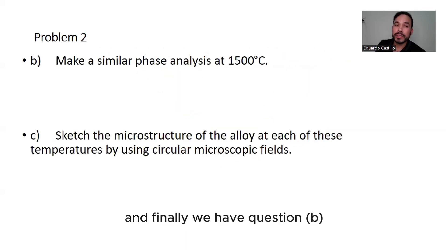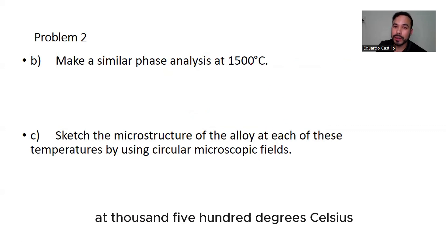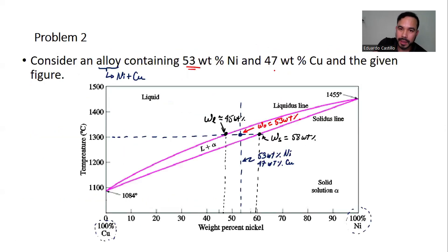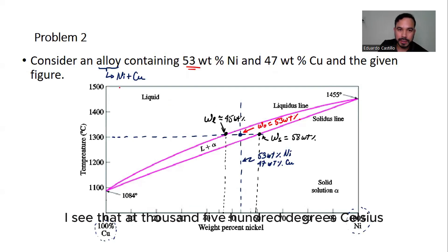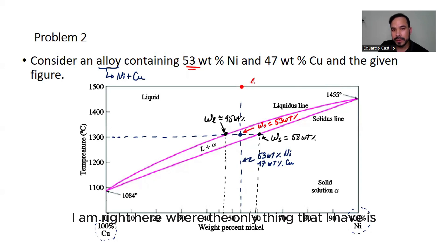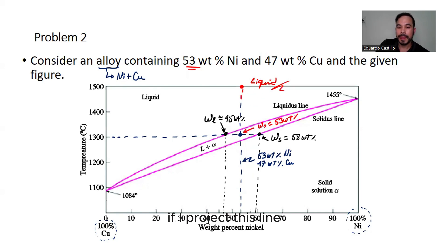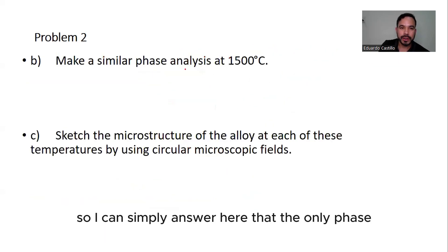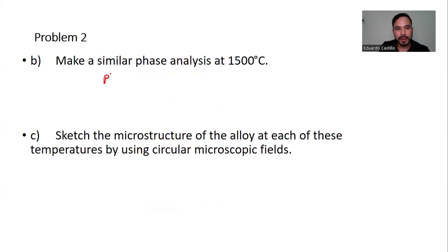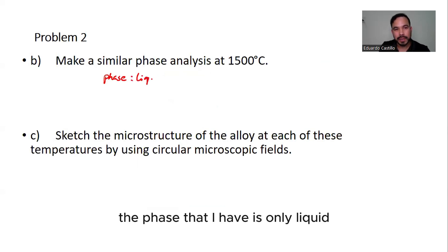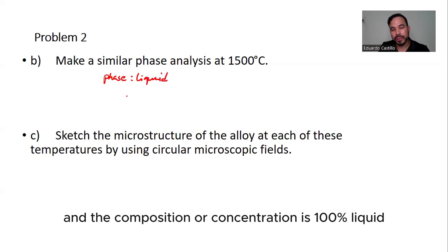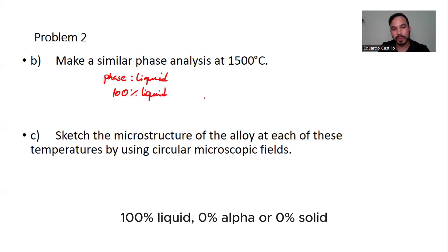Finally, part B asks for a similar phase analysis at 1,500°C. At that temperature and the 53 wt% Ni composition, I am entirely within the liquid region. The only phase present is liquid, at 100% liquid and 0% solid alpha.